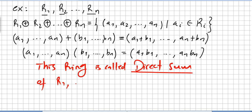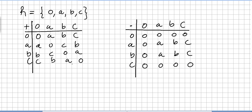This is the direct sum R₁ ⊕ … ⊕ Rₙ. For the last example, we take a set with elements {0, a, b, c} and define addition and multiplication by Cayley tables. You can check through the Cayley table that this is a non-commutative ring without any unity.